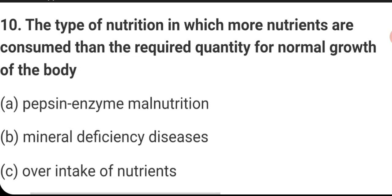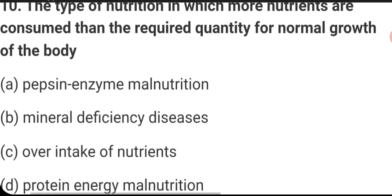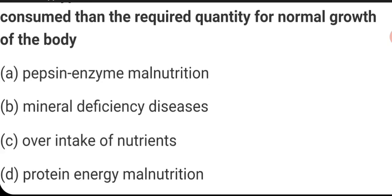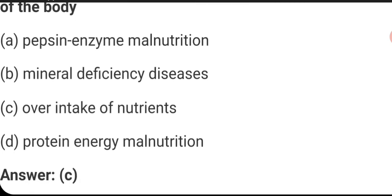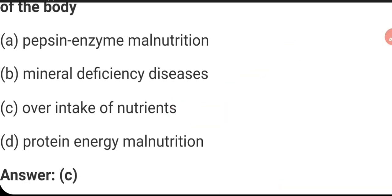The type of nutrition in which more nutrients are consumed than the required quantity for normal growth of the body is called overnutrition — over intake of nutrients. The right answer is C.